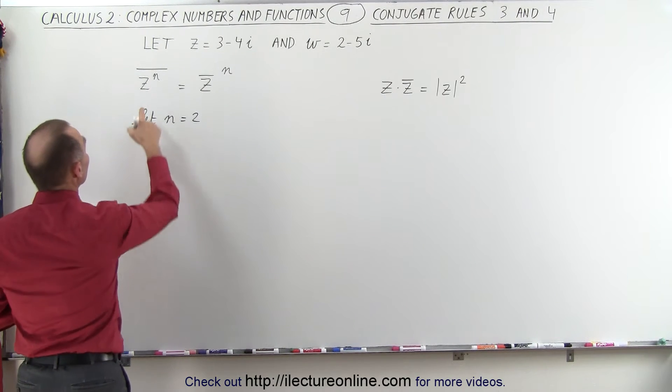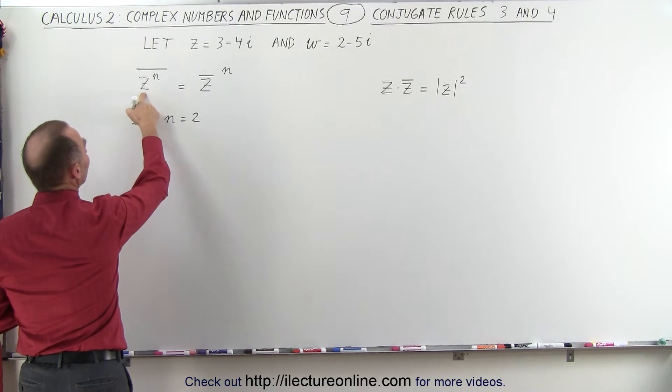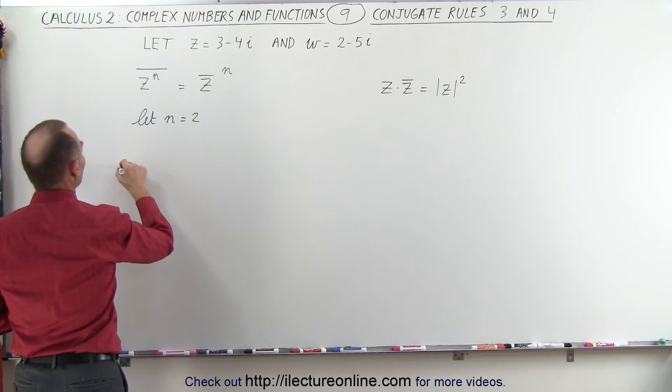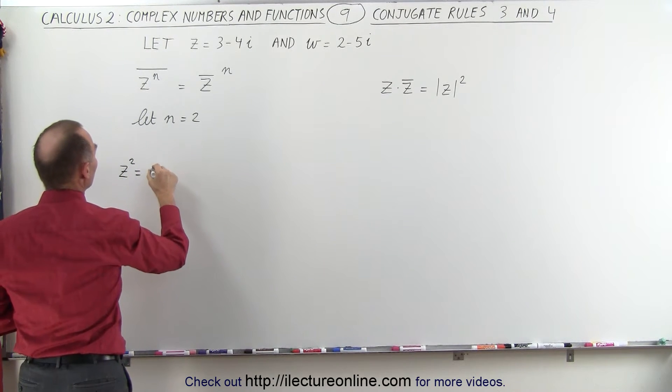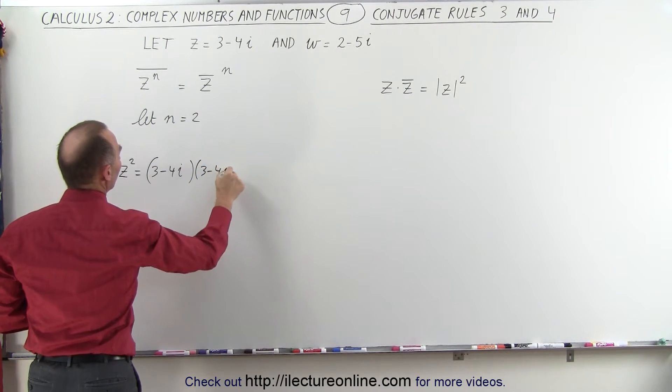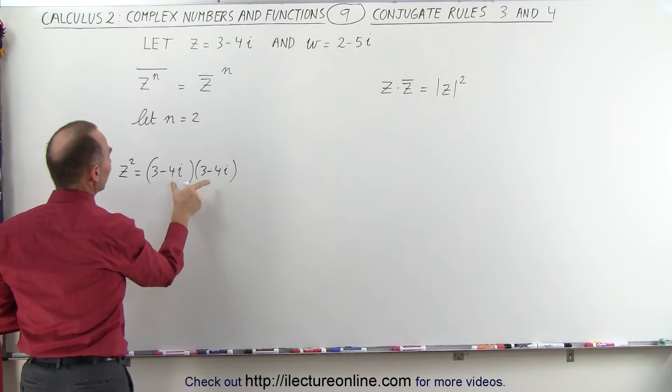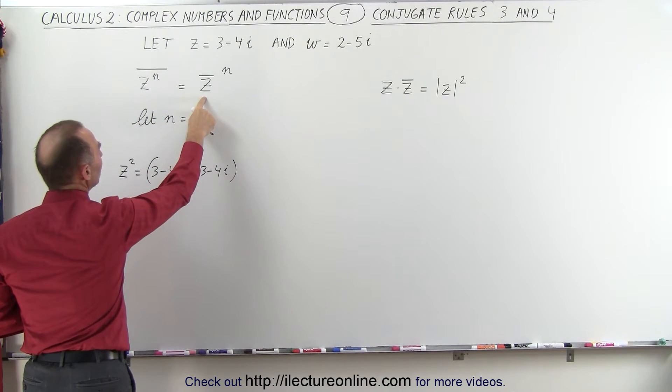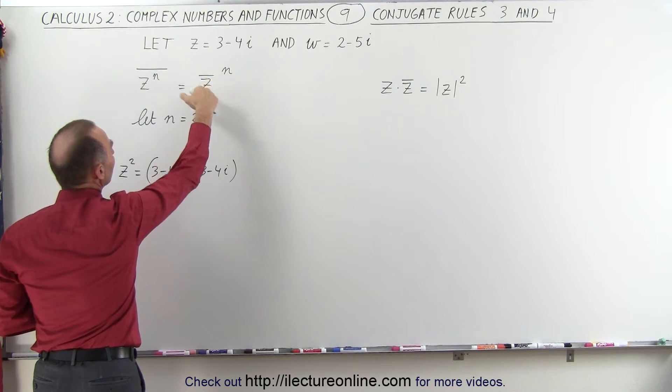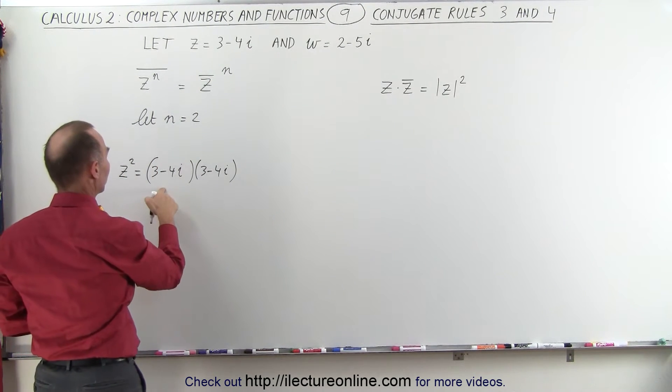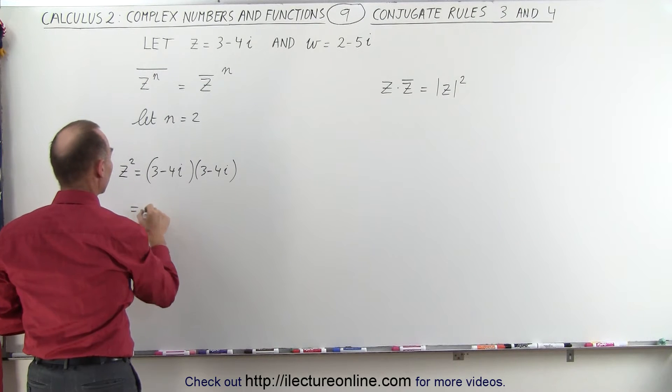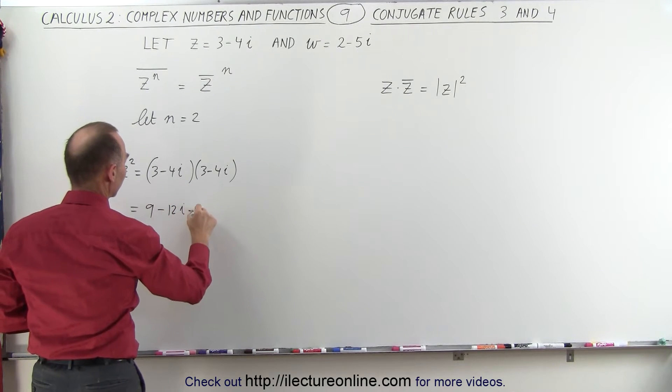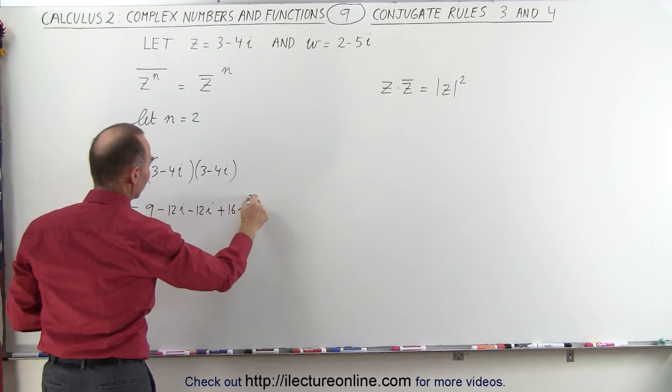And so we multiply z by itself. That means z to the second power is going to be equal to 3 minus 4i multiplied times 3 minus 4i. And if we then take this product and take the conjugate of that, that should equal the conjugate of z squared. Let's see if that is the case. So first we're going to multiply these together. This is 3 times 3, which is 9, minus 12i, minus 12i, and that would be plus 16i squared.